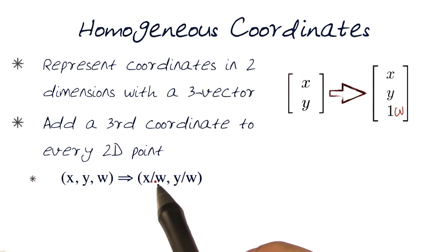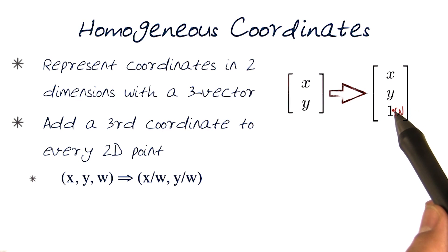The thing to remember is what w implies: it's again my two-dimensional vector, except that now we are dividing both x and y by the third component, w.